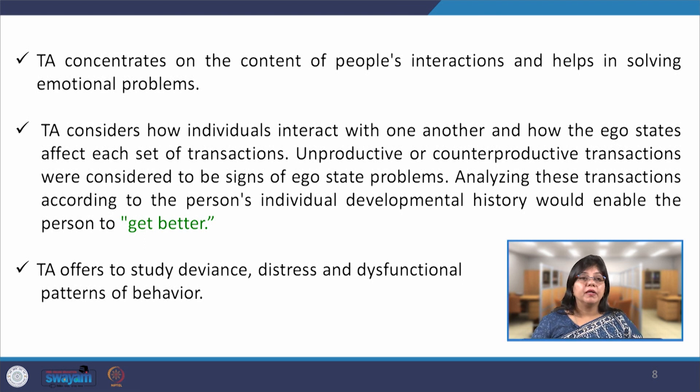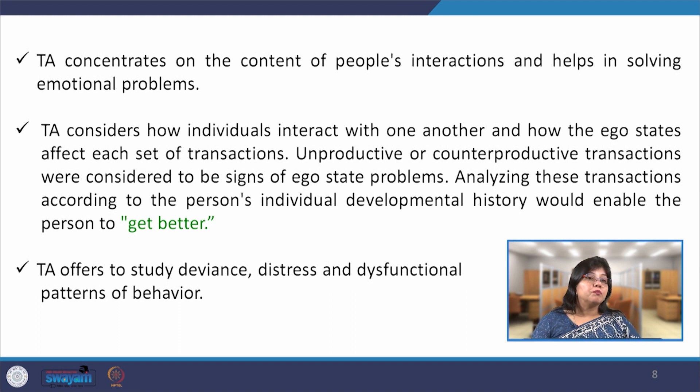TA offers the ability to study deviance, distress, and dysfunctional patterns of behavior. Based on unconscious minds, actions, and ego states, a person can easily identify deviancies and dysfunctionality in human behavior and work to overcome these problems. These are the benefits of transactional analysis, which is considered one of the most popular information processing tools in organizations and group behavior. We are through with this discussion of the advanced course in social psychology — I hope it will be fruitful for every student enrolled in this course. Wish you all the best, thank you so much.